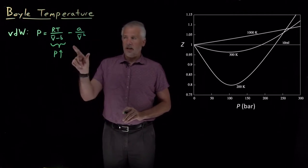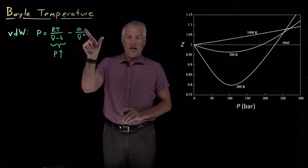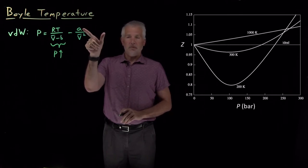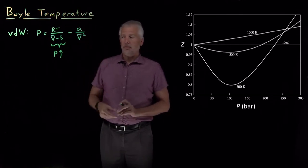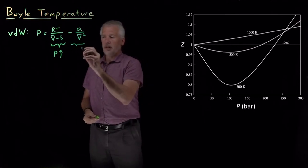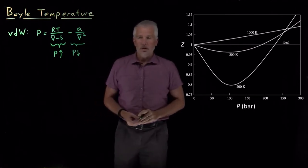And on the other hand, when the gas molecules have some attractive interactions, some positive value for A, then we subtract something from the pressure, so this attractive intermolecular interaction term causes the pressure to decrease.